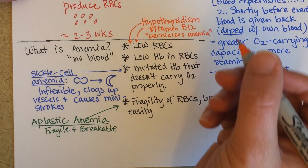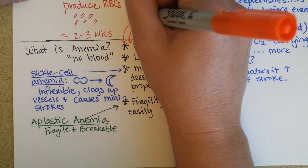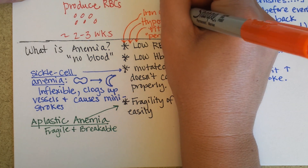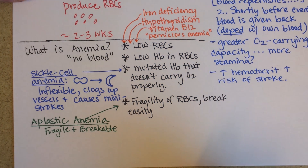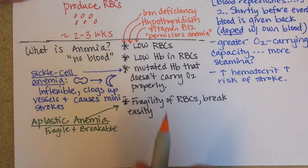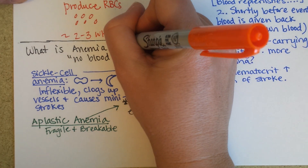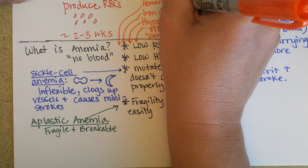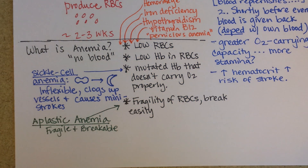What about iron deficiency? That could be caused by dietary problems or by poor absorption of iron — sometimes we can't absorb iron as effectively. And then of course hemorrhage, or blood loss, is another cause.